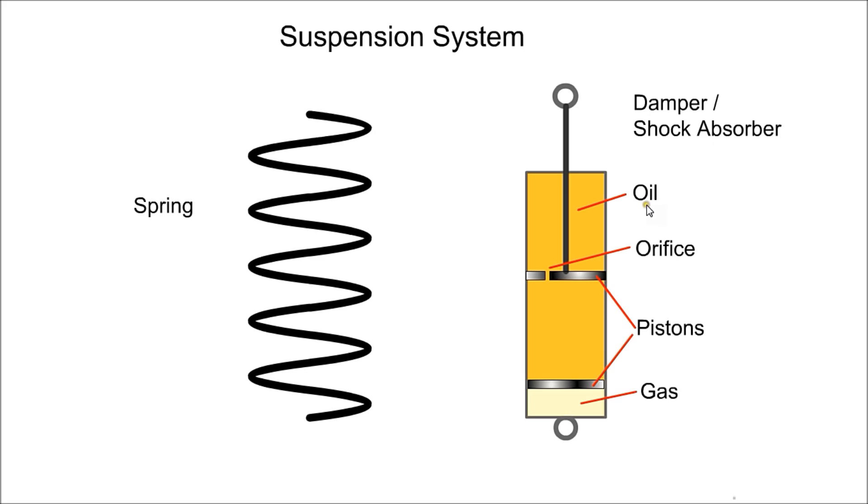It consists of an oil-filled chamber, and the flow of oil through the piston is restricted by a small orifice. When the top rod moves down, the gas below the bottom piston is compressed to allow for the extra rod volume.